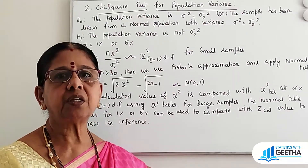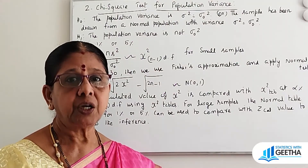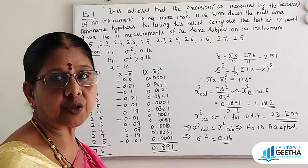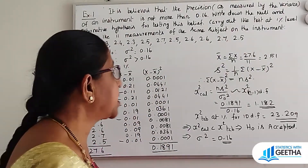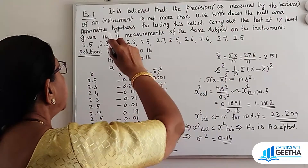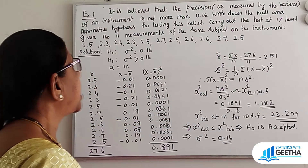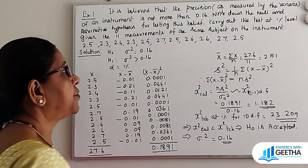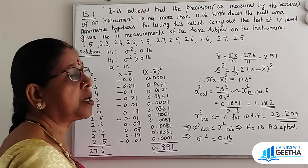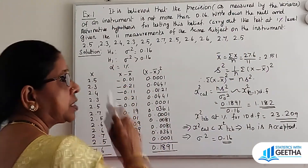So these are the steps for testing the significance of population variance using the chi-square test. First exercise: it is believed that the precision, as measured by the variance of an instrument, is not more than 0.16. Write down the null and alternative hypothesis for testing this value. Carry out the test at 1% level given the 11 measurements of the same subject on the instrument.